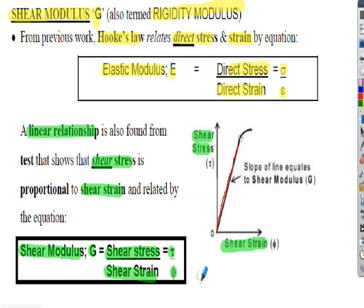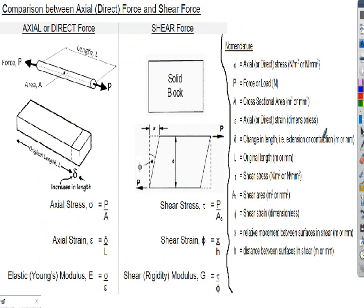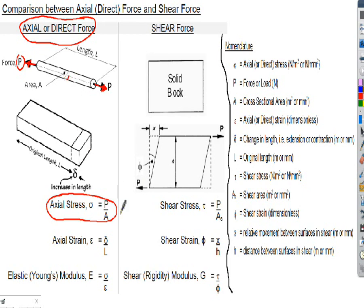The relationships between direct stresses and strains and shear stresses and shear strains are quite similar. If we apply a direct or axial force P to a structure — shown here in tension, though it could be tension or compression — we end up with three formulas: axial stress equals force over cross-sectional area; axial strain equals extension over original length; and elastic modulus E equals stress over strain, which is sigma over epsilon. These two formulas are linked together by the E formula, just as we used a few weeks ago.